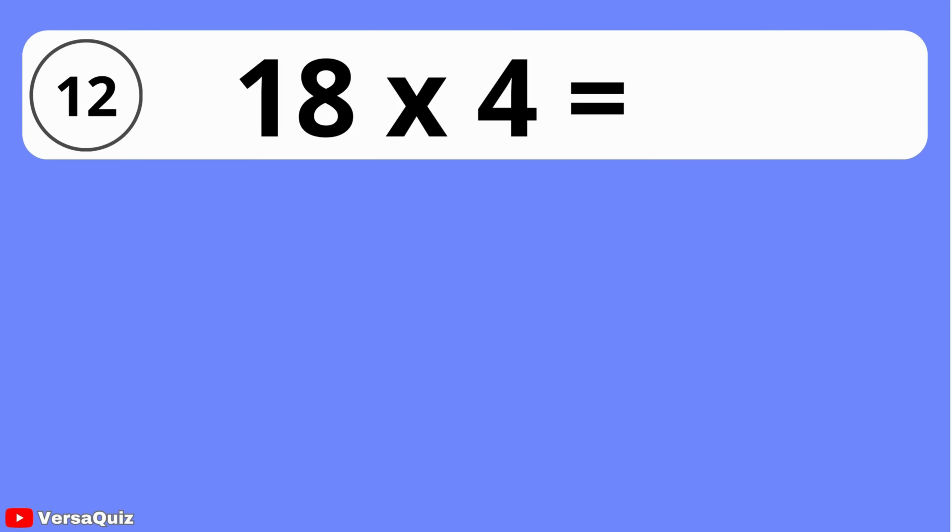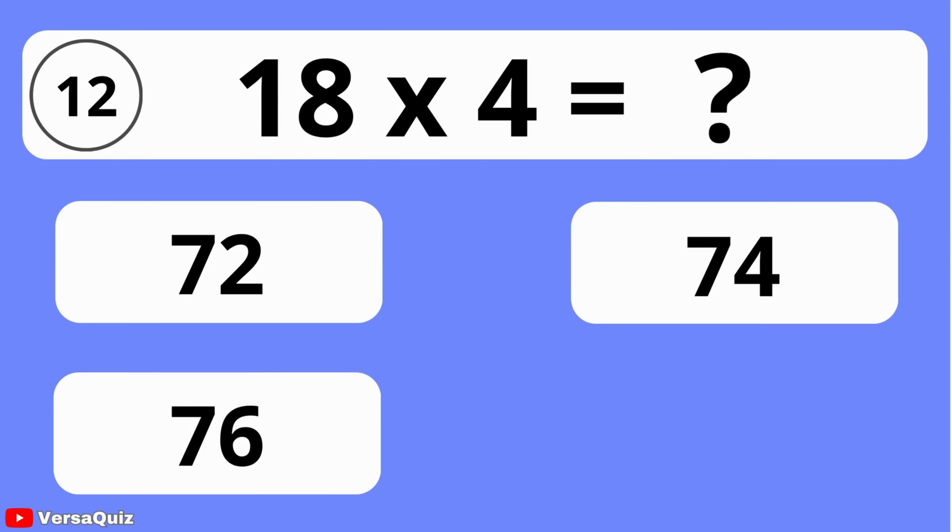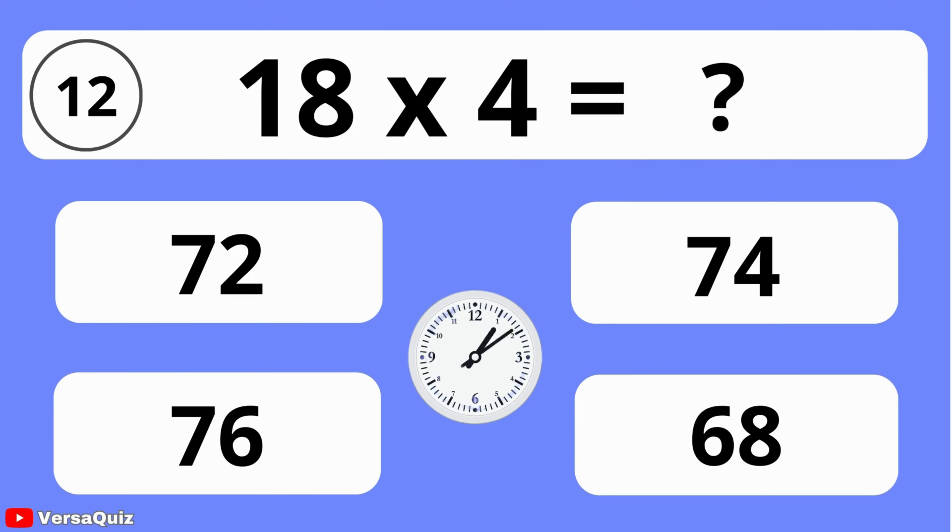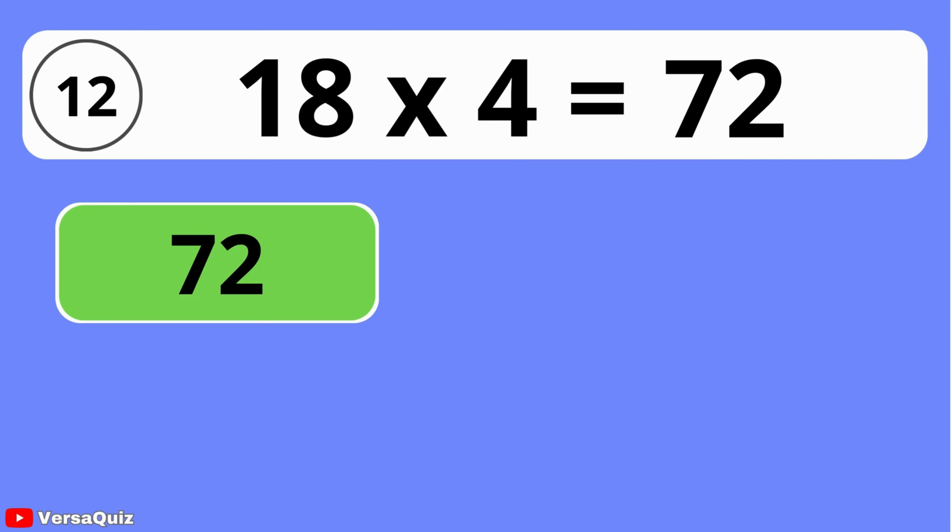What is 18 times 4? 72, 74, 76, or 68? The answer is 72. 18 times 4 is equal to 72.